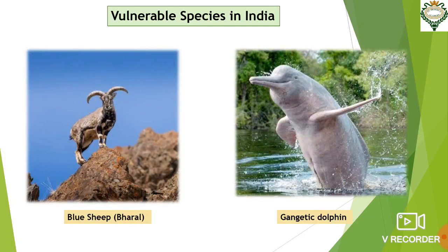Vulnerable species includes species whose population has declined to a level from where it is likely to move into the endangered category in the near future. In this category, we have blue sheep, gangetic dolphin, etc.